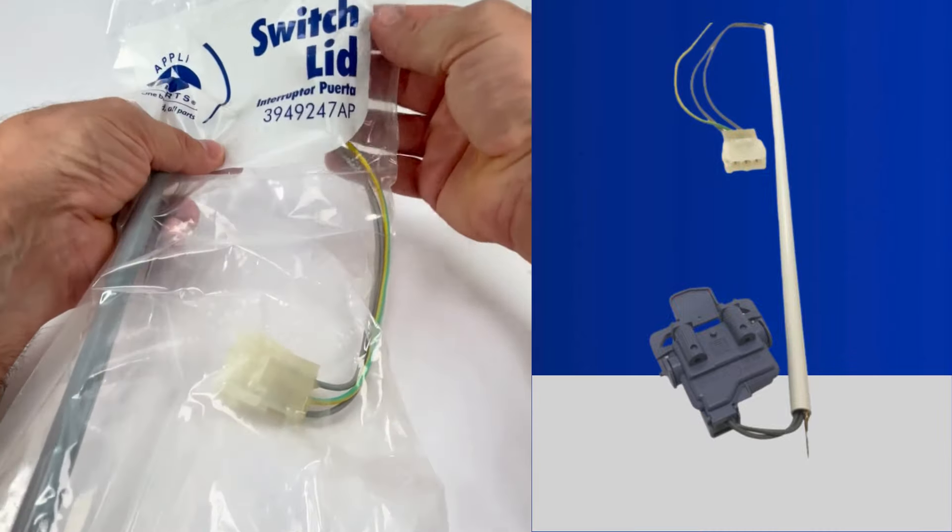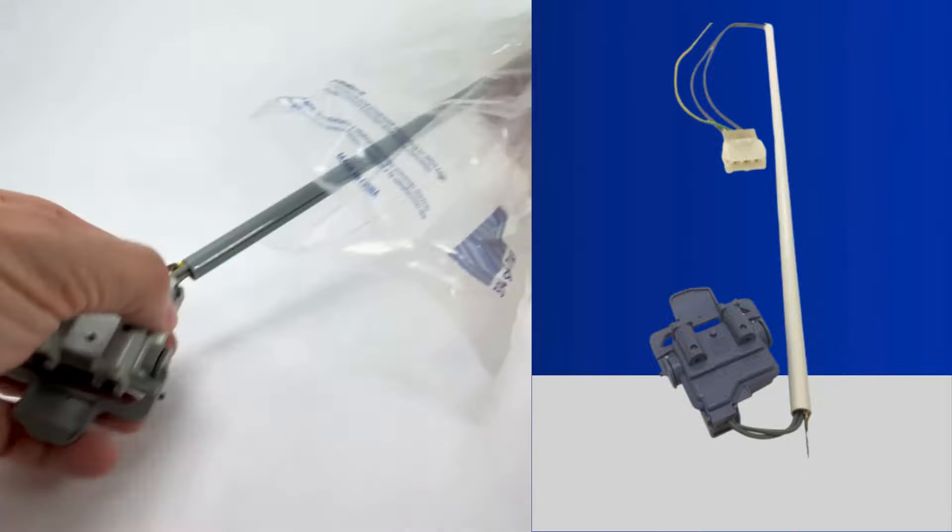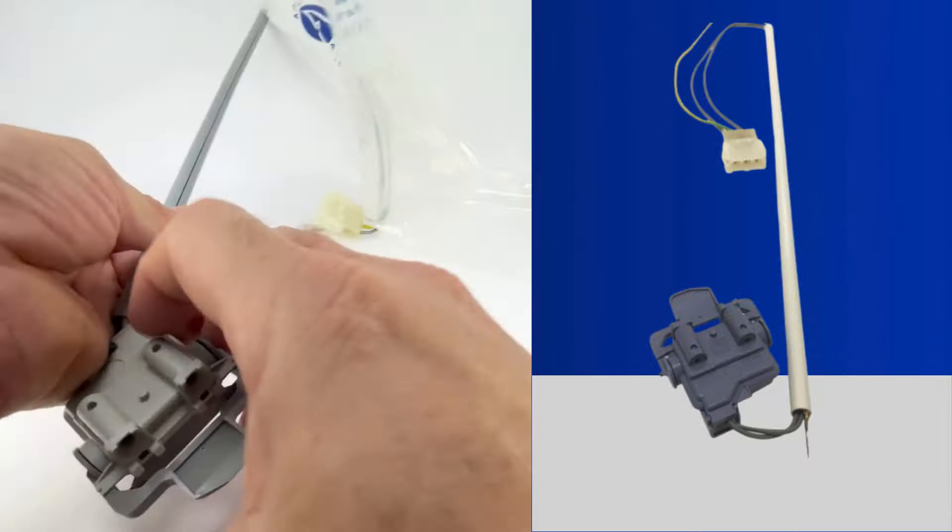The Appli Parts 3949247 is a replacement lid switch compatible with major brands like Whirlpool, Kenmore, Maytag, and Crossley. Always double-check your model number before purchasing.